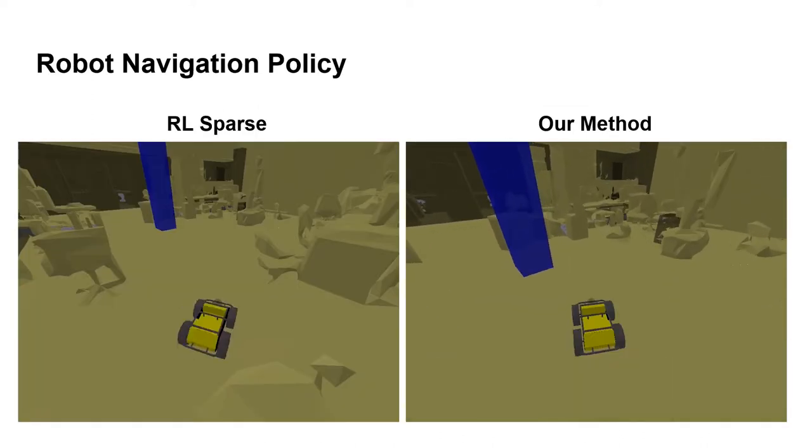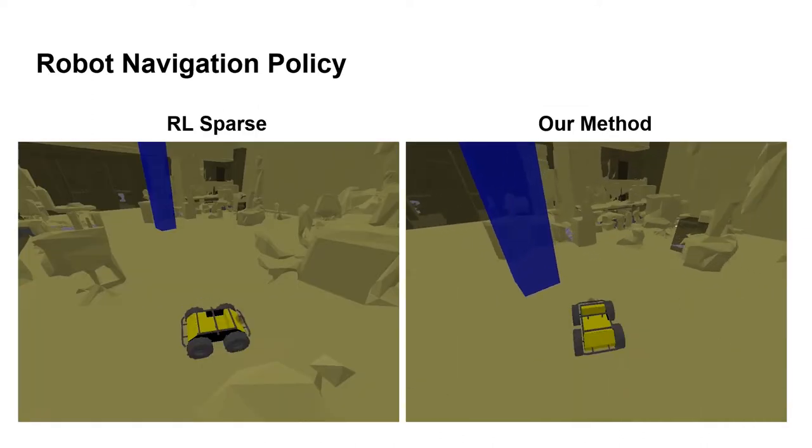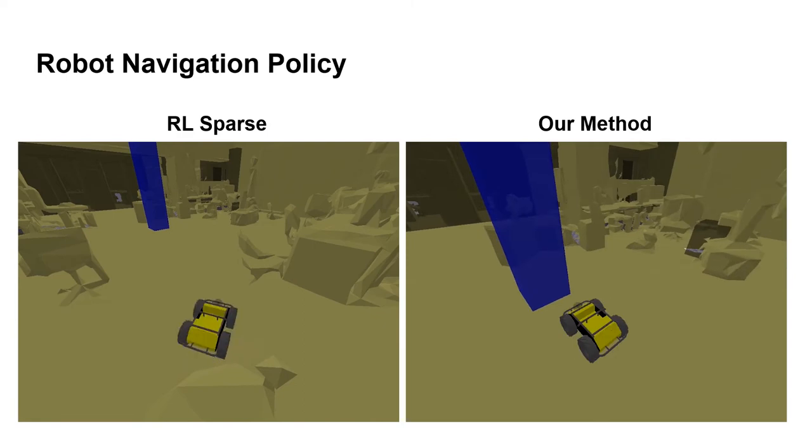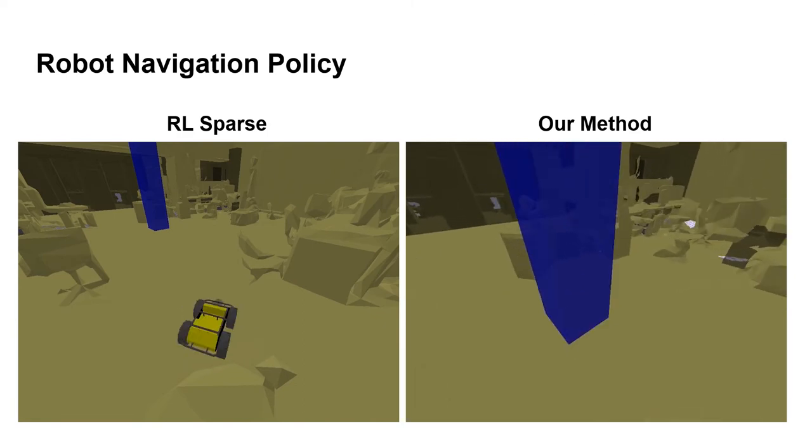Here, we show the policy learned from sparse reward. Without guidance, it conservatively learns to spin on a spot to avoid colliding with obstacles.